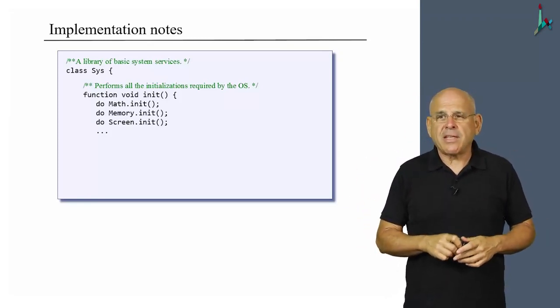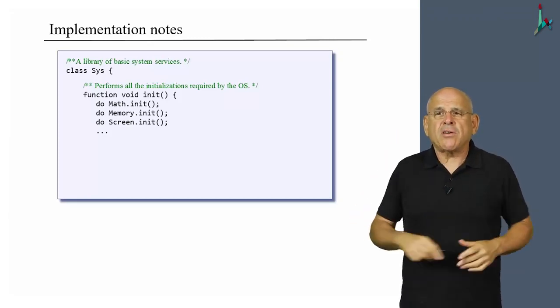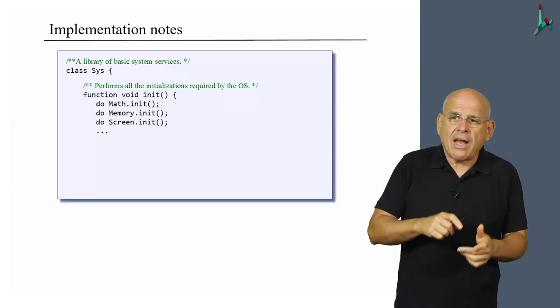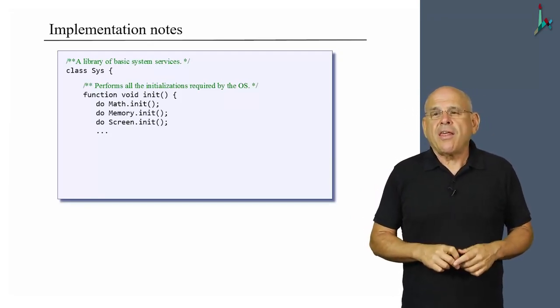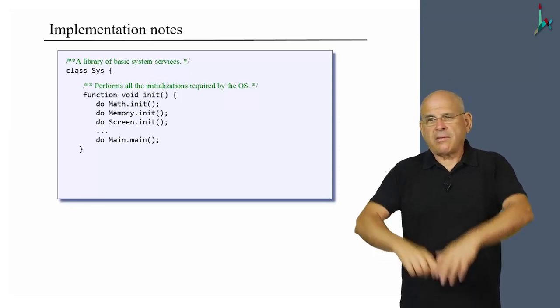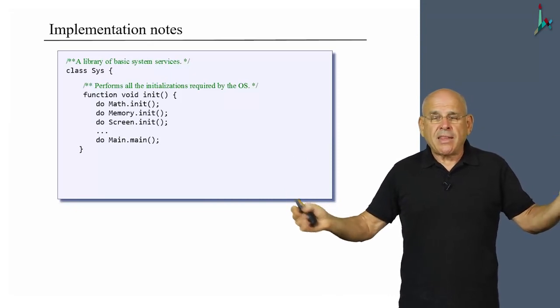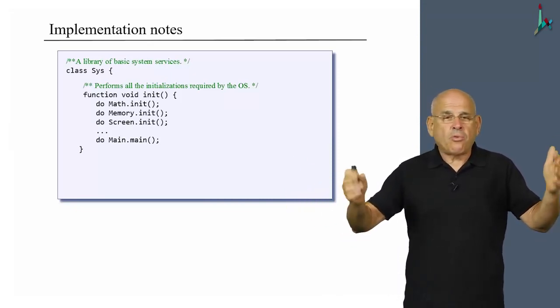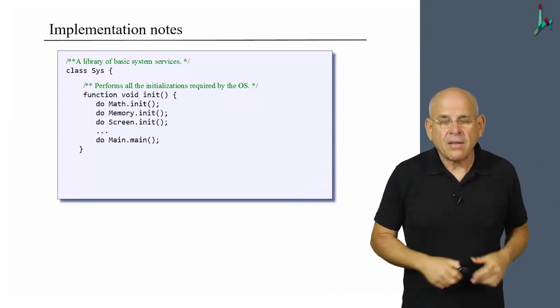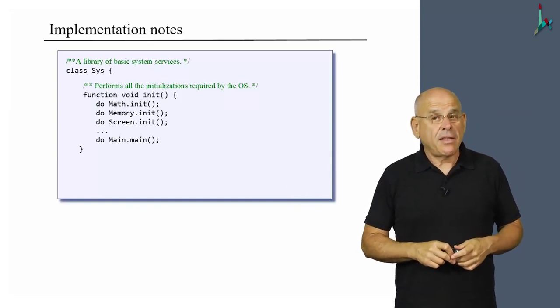Some OS classes don't have an init function, so we don't have to call them. Like array, I think, doesn't have one. So after we call all the init functions of the OS classes that have init functions, then we simply call main.main, and that's it. And then from this point on, everything that happens is at the mercy of the programmer that developed the high-level application.